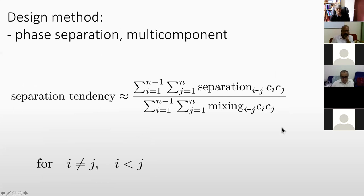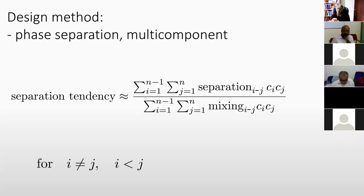A parameter comparing phase separation (precipitation) against mixing is defined and used in the machine learning model. These calculations can be done by hand without the machine learning model itself, and they are instructive because they make you think carefully about what is important in designing a high entropy alloy.